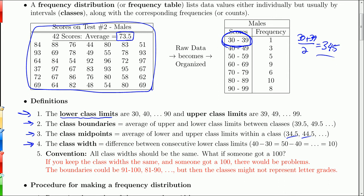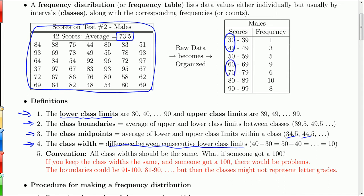The class width can be found from consecutive lower class limits, consecutive upper class limits, or consecutive class boundaries. It's easiest to see as the difference between consecutive lower class limits. Looking at 40 minus 30, that's 10. Looking at 70 minus 60, that's also 10 — they're all 10. Conventionally, all class widths must be the same for it to be a true frequency distribution, so you only have to find the class width for one of them.